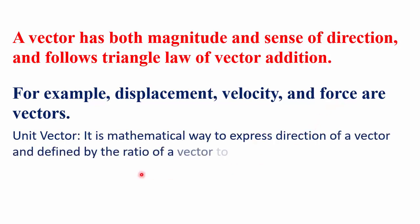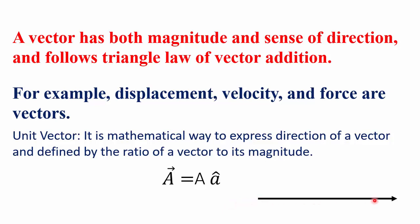Next, what is a unit vector? A unit vector is a vector such that any vector A equals its magnitude multiplied by a unit vector. For example, if you have four unit vectors, then four times the unit vector makes the total vector capital A.